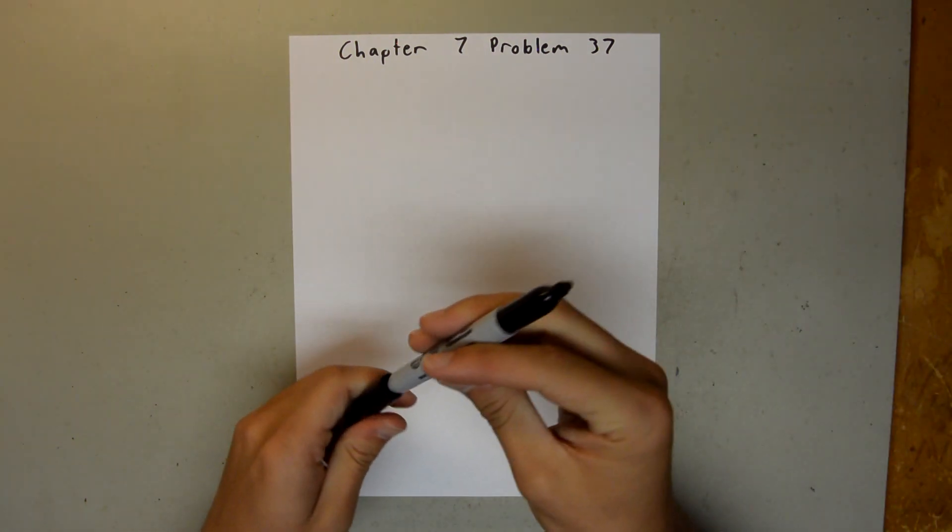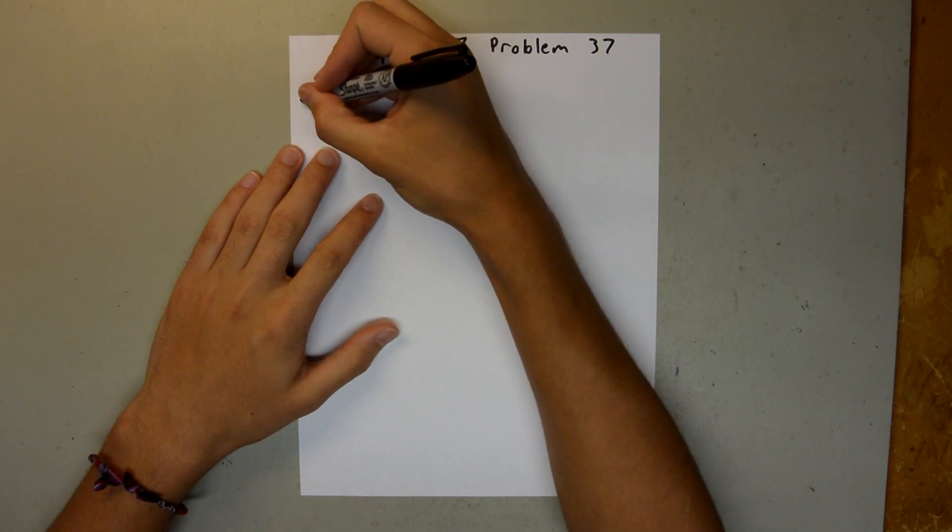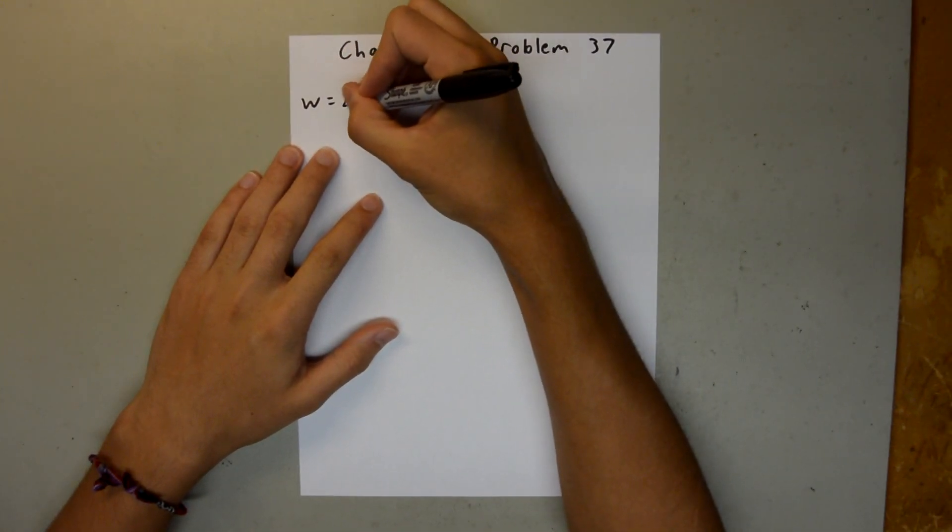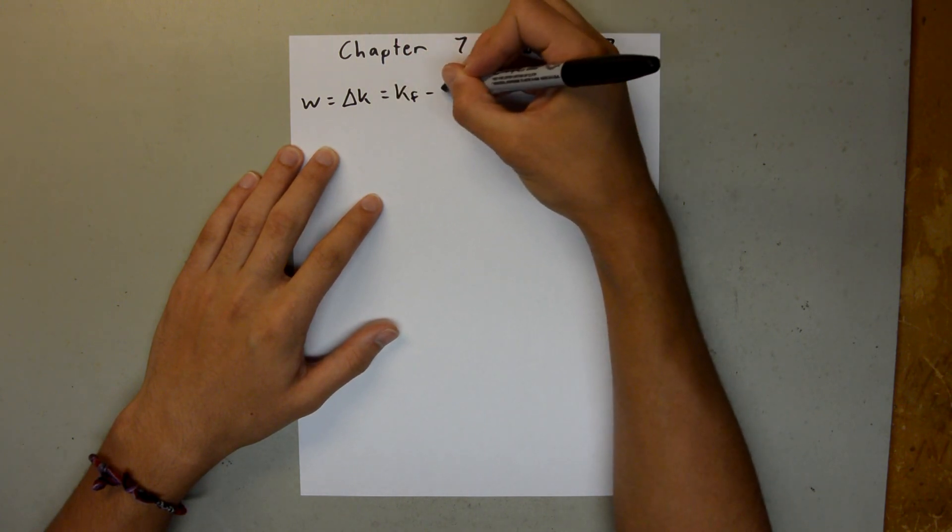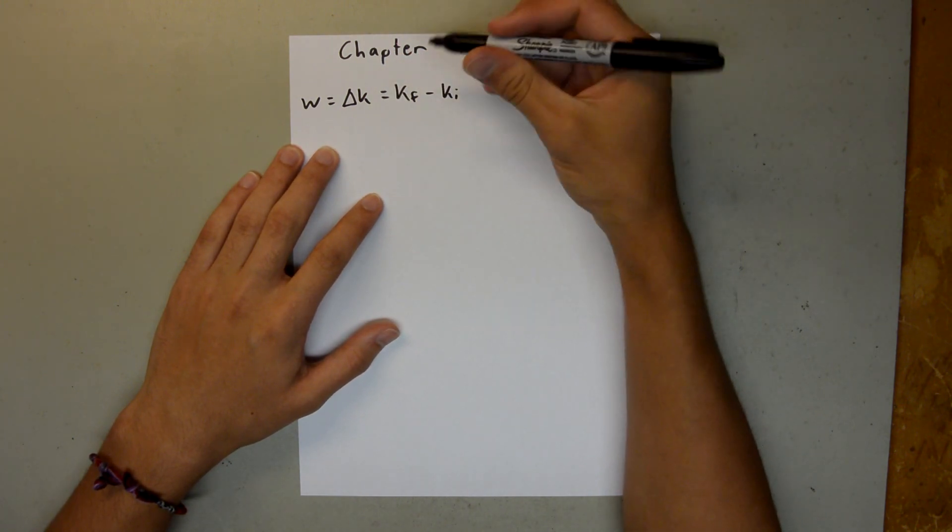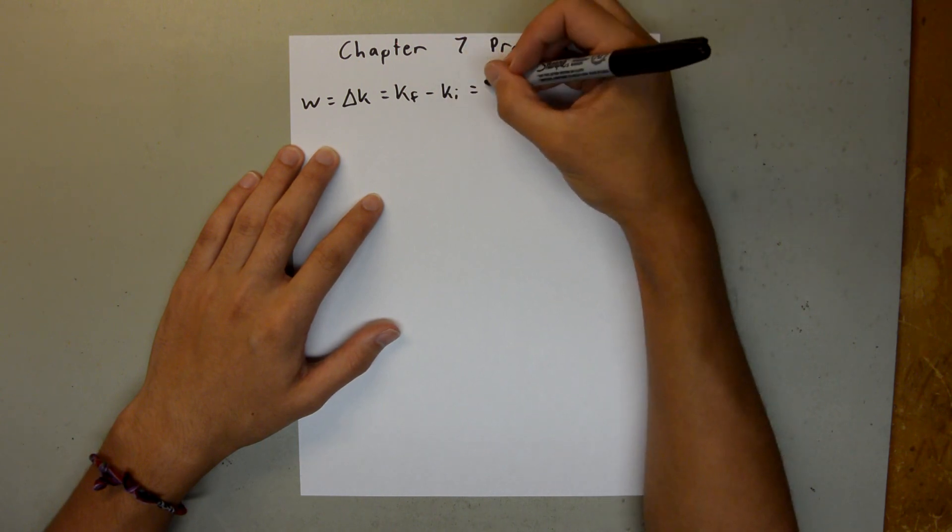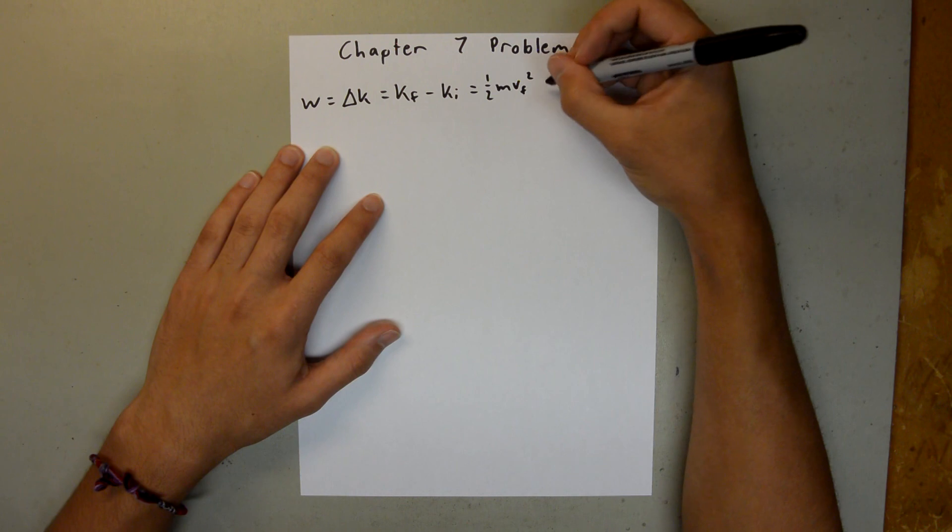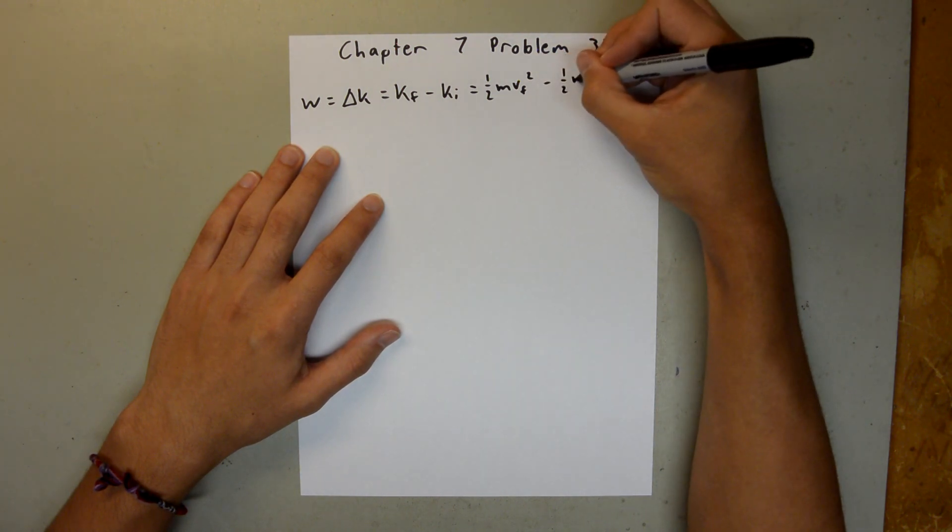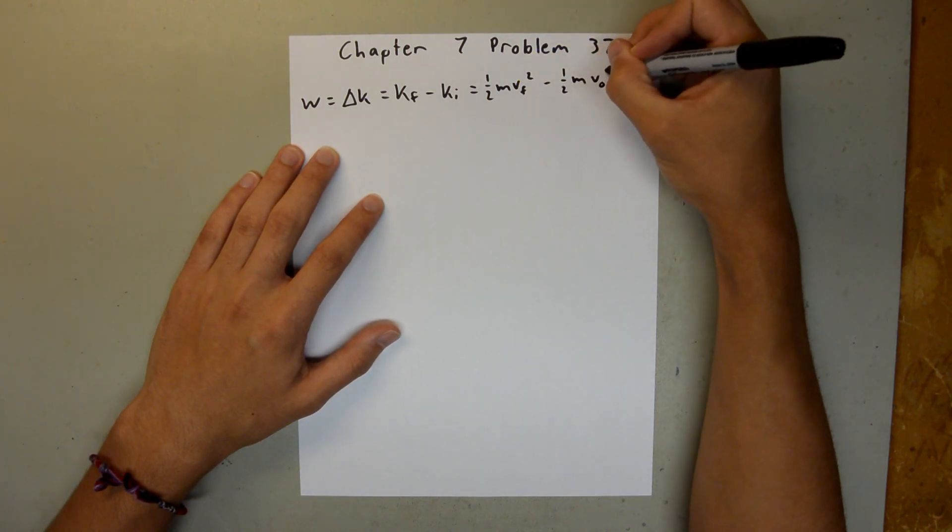So, we know that work is equal to the change in kinetic energy, which is equal to the final kinetic energy minus the initial kinetic energy, and that is equal to 1 half mv final squared minus 1 half mv initial squared.